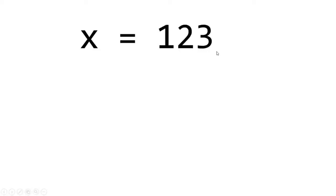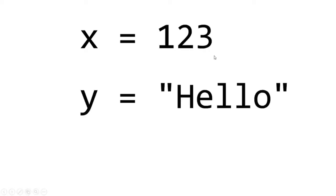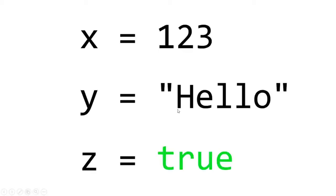With programming we can perform something similar, but we are not limited to just numbers. We could also store words, whole sentences, and things called boolean values which hold either true or false. But if we're going to store a value within a variable, we have to list the data type of what we're planning to store — is it going to be a number, a word, a boolean? So we need to discuss data types.